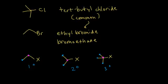Looking at our common nomenclature examples: tert-butyl chloride has the halogen-bearing carbon attached to three other carbons, making it a tertiary alkyl halide. For ethyl bromide, that carbon is attached to one other carbon, making it a primary alkyl halide. Recognizing how an alkyl halide is classified will be your first step when studying reactions of alkyl halides.